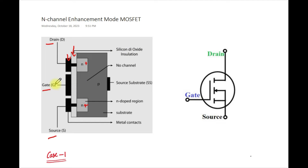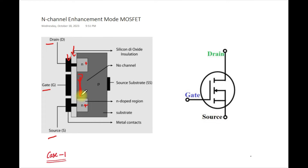The gate terminal is present, and the white-colored layer is the silicon dioxide insulation layer. Because of this SiO2 layer, the gate and the P substrate are separated — these act as two parallel plates, creating a capacitive effect. Comparing with the depletion mode MOSFET, there is no dedicated physical channel here, which is why it is called enhancement mode.